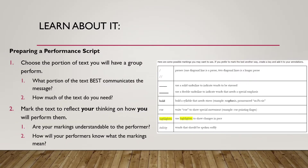There really are only two steps in preparing a performance script. The first step is choosing the portion of the text you will have a group perform. You need to think about which portion of the text best communicates the message and theme, and then decide how much of the text you will need — just a little from the beginning, some from the end, or a combination from the beginning, middle, and end.